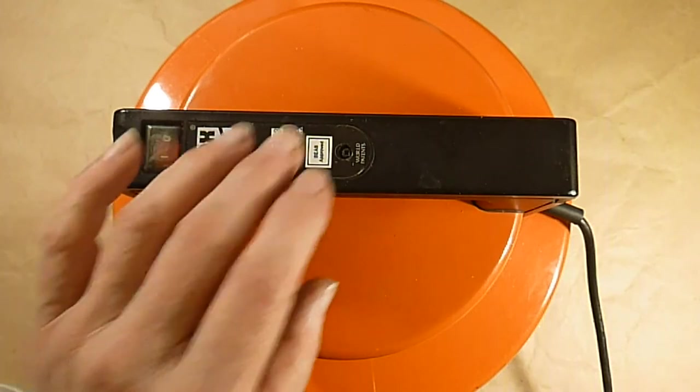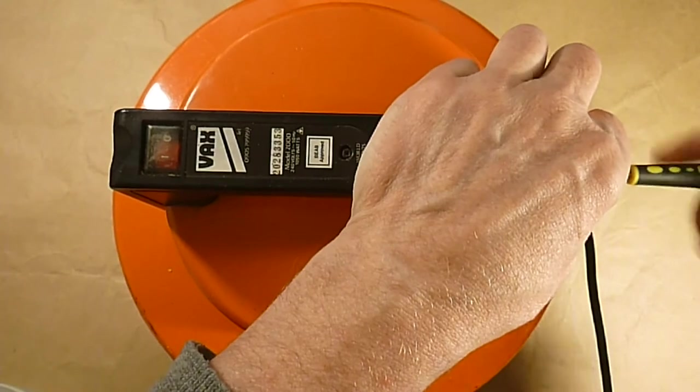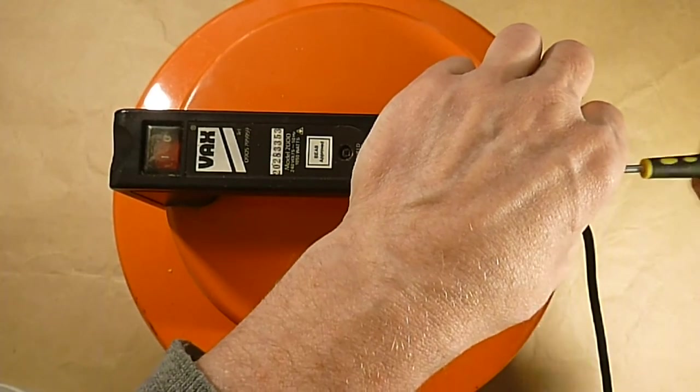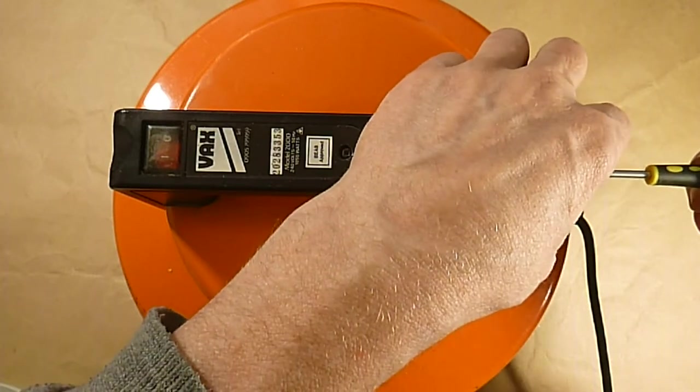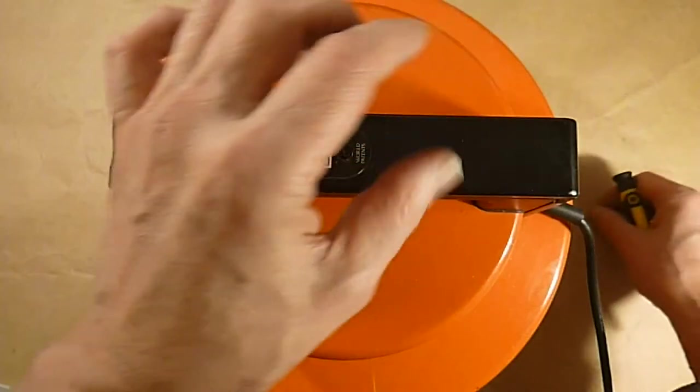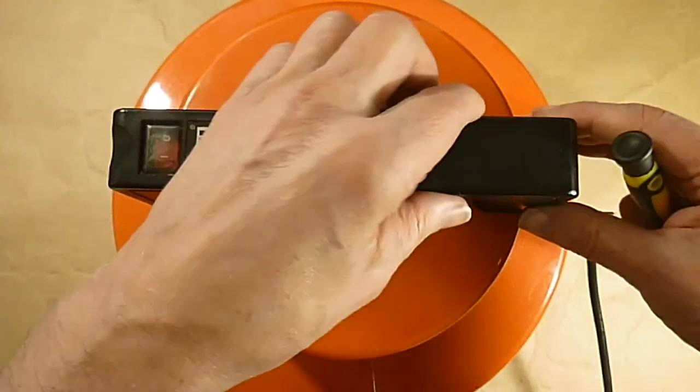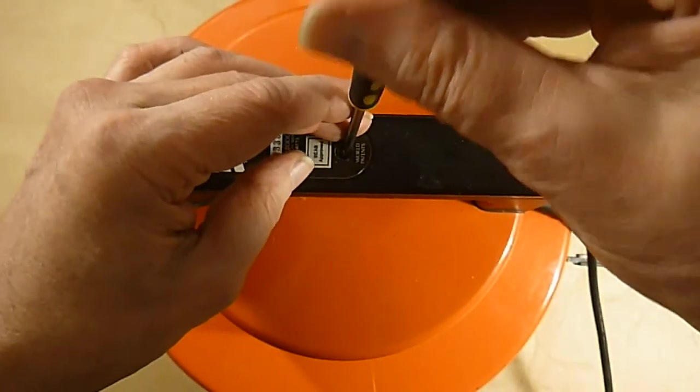So first of all we need to remove this handle. There's one screw at the back. And there's another screw that will actually come off now. Another screw at the top.